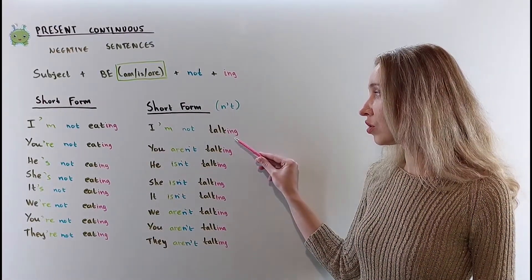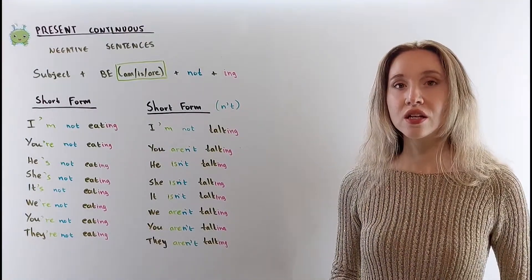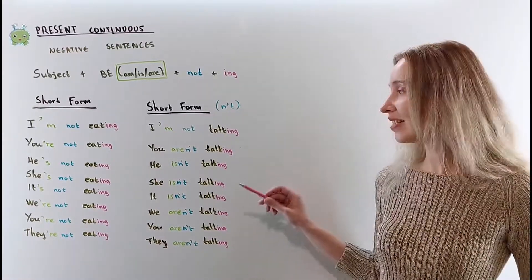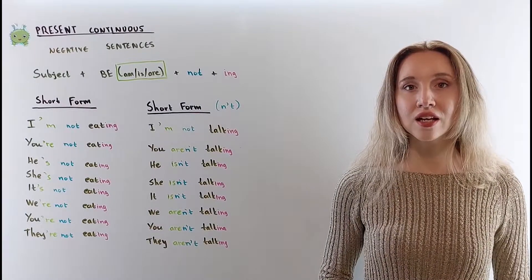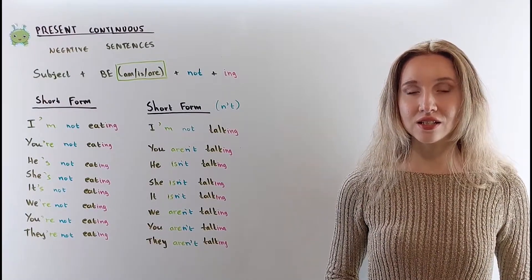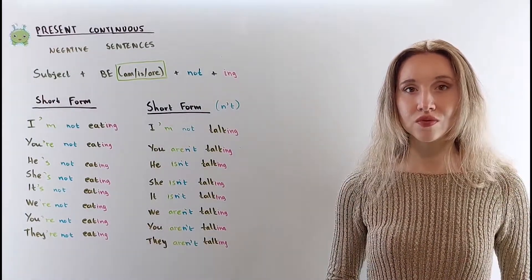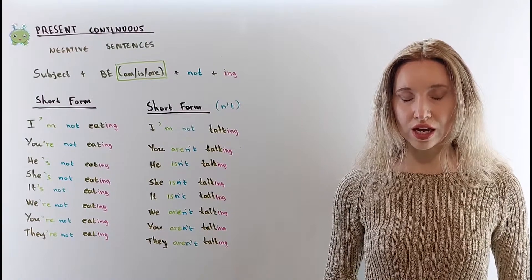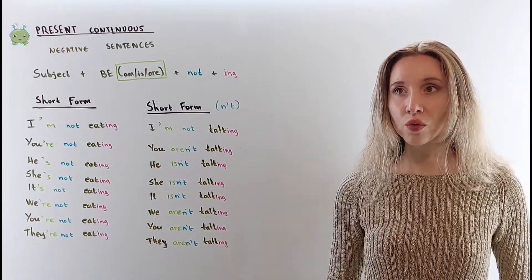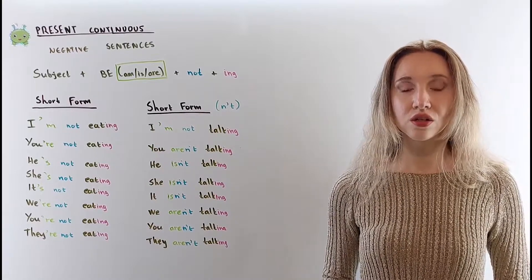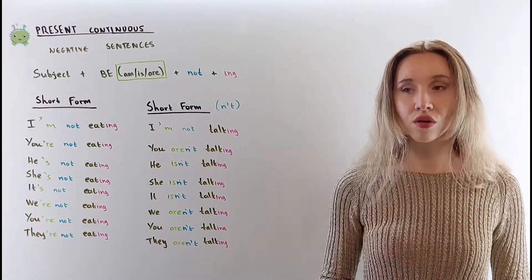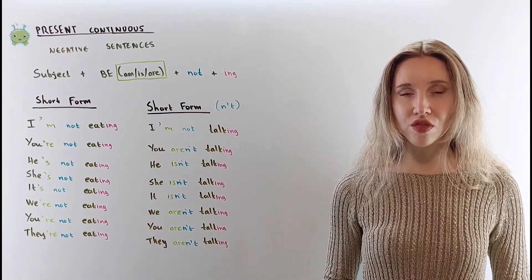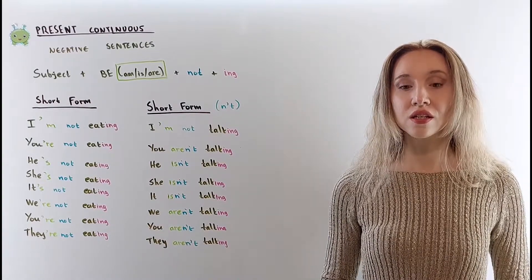The other possible way to form negatives uses aren't and isn't: I'm not talking, you aren't talking, he isn't talking, she isn't talking, it isn't talking, we aren't talking, you aren't talking, they aren't talking.